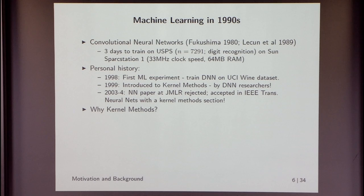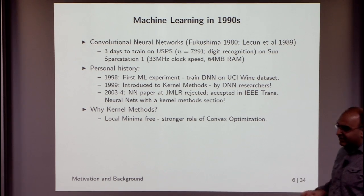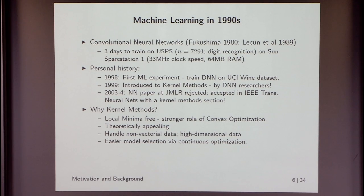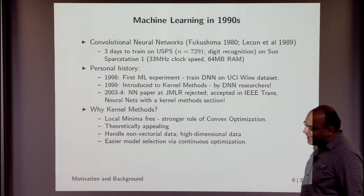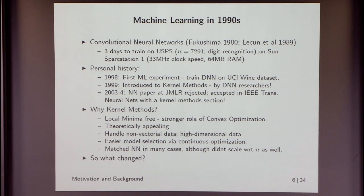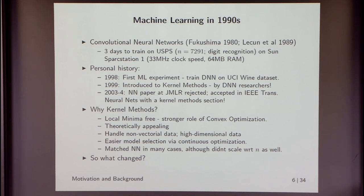Why did kernel methods make an impact in the mid-1990s? The machine learning problems were local-minima-free — pure, nice convex optimization problems — which allowed optimization folks to get more involved. They were considered theoretically appealing with connections to functional analysis. They could handle non-vector data: you could have kernels on strings, and the input need not have any structure. Model selection was easier because the hypothesis space was continuous. In practice they matched neural nets in many settings, though they never scaled well with respect to the number of samples.